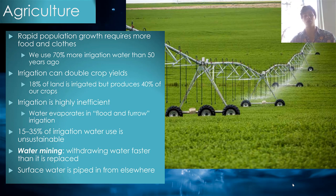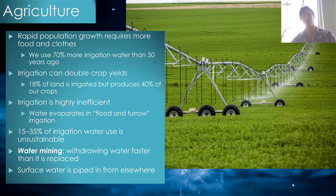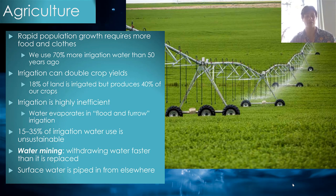A lot of clothes come from cotton, linen, and plant-based products, so when we irrigate, we're not just irrigating for food — we're also irrigating for clothing. Irrigation can double crop yields, and 18% of land is irrigated but produces 40% of our crops, referring to that agricultural intensification from Chapter 7. However, irrigation is highly inefficient — only about 40% of the water used to irrigate actually makes it into crops; most evaporates right off the leaves.